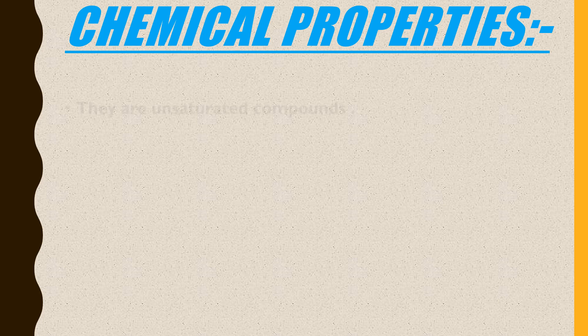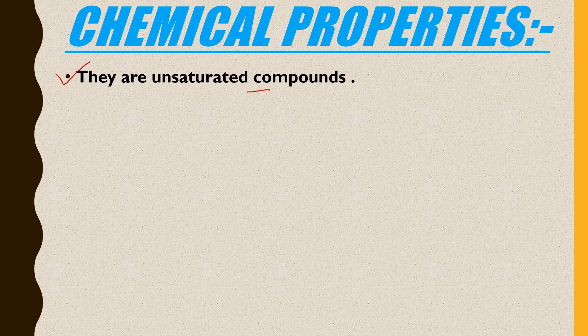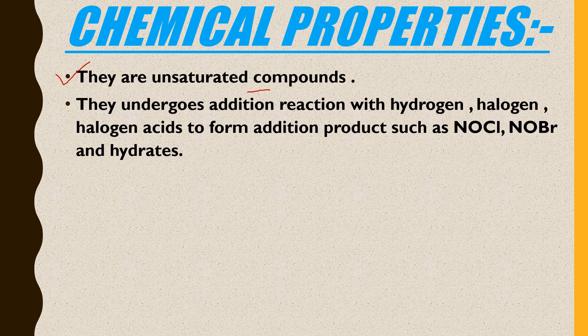Next, we study the chemical properties of terpenoids. First, they are unsaturated compounds — as mentioned in the definition, all terpenoids are unsaturated. Second, they undergo addition reactions. When terpenoids are reacted with hydrogen, halogens, or halogen acids, they undergo addition reactions to form addition products — for example, NOCl, NOBr, or hydrates.